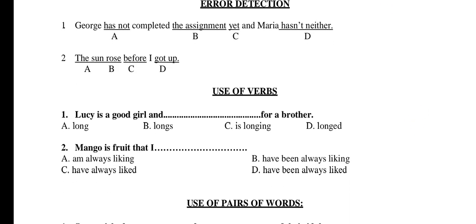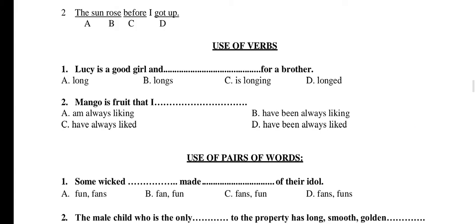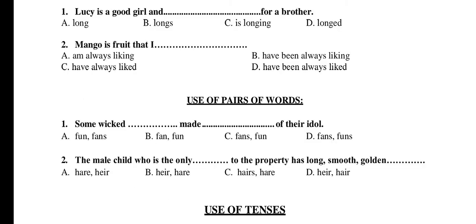Use of Verbs. Question 1: Lucy is a good girl and ___ for a brother. A) long, B) longs, C) is longing, D) longed. The right option is C: is longing. Question 2: Mango is a fruit that I ___. A) am always liking, B) have been always liking, C) have always liked, D) have been always liked. The right option is C: have always liked.